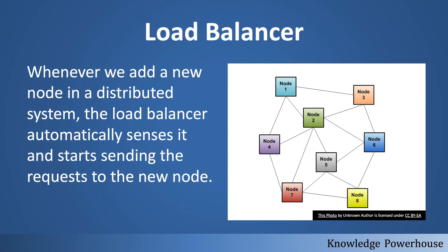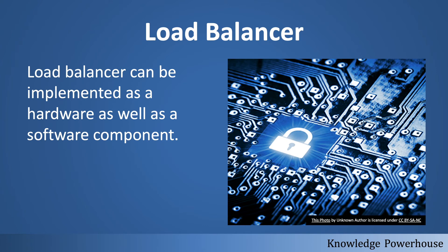Whenever we add a new node in the distributed system, the load balancer has to automatically sense it and start sending requests to that new node. For that, we implement some kind of health check or ping mechanism, so there is a protocol by which a new node registers itself with the load balancer. That way, the load balancer always has an up-to-date list of which nodes are up and how to distribute traffic among them. A load balancer can be implemented as hardware as well as a software component.